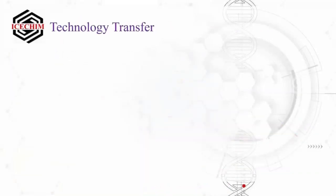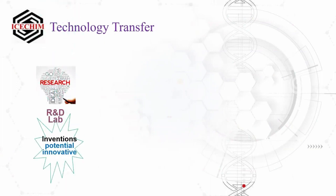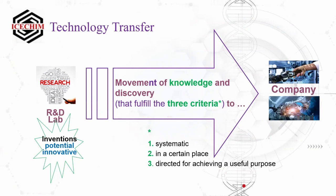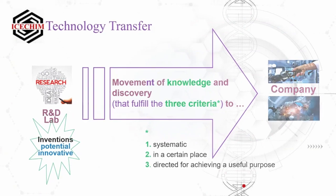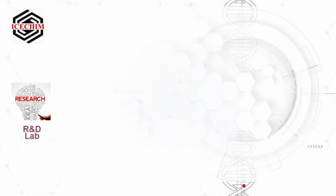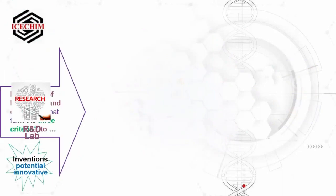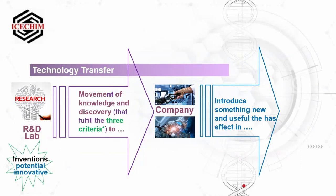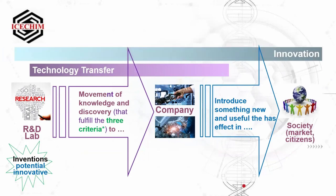Now, technology transfer: when we start in an R&D lab and derive inventions that are potentially innovative, we move that knowledge and discoveries — those that fulfill the three criteria — to a company. That is technology transfer. It is linked to innovation: we do the technology transfer, and after, the company together with the lab introduces it to the market. You can see how the influence of technology transfer decreases as it goes toward market introduction. At that moment, it becomes innovation, and the R&D labs together with the company should go hand in hand for this process.